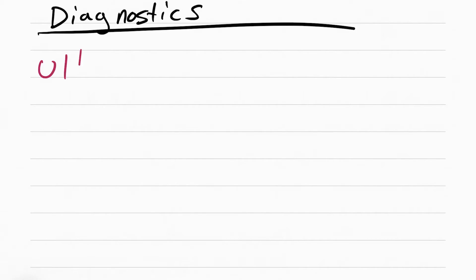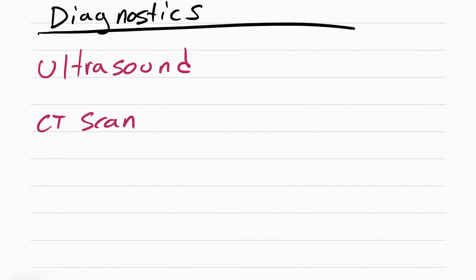The diagnostic needed for appendicitis is going to be an ultrasound. This is the most common way to diagnose appendicitis, especially in kids, because of the radiation that comes with CT scans.